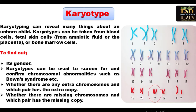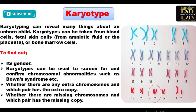In a karyotype showing Down syndrome, you can see an additional chromosome at position 21 — a trisomic condition. If any extra copy of a chromosome is present, or if a chromosome is missing, karyotype analysis can detect this abnormality.